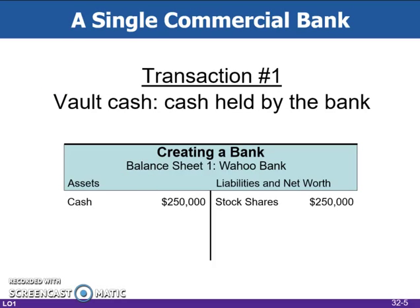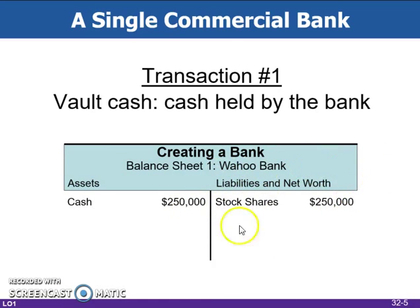Investors have created a bank and organized it as a corporation by contributing a total of $250,000 cash in exchange for ownership shares in the bank's worth of $250,000. The cash they invest goes on the asset side of our T-account, whereas the stock shares go on the liabilities and net worth side of our T-account. Notice that the two sides are equal, and this will continue throughout the exercise.